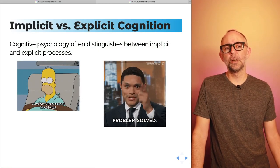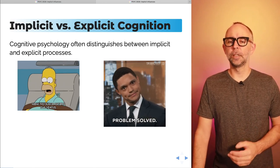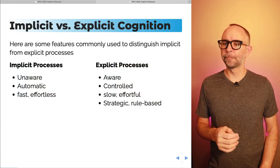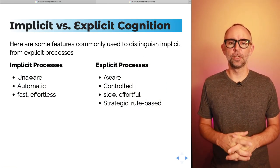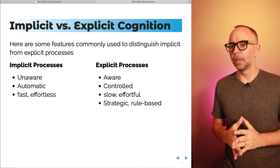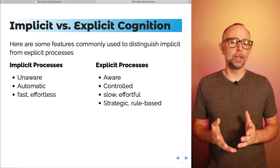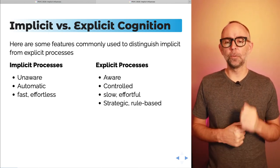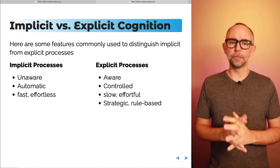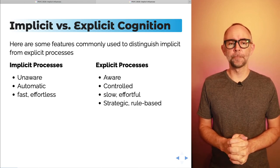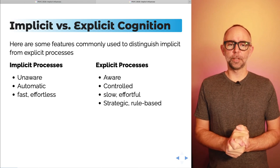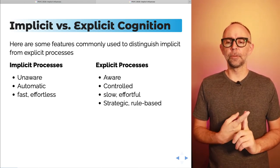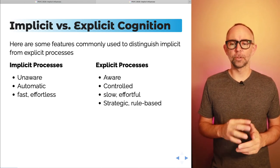Cognitive psychology as a discipline often distinguishes between implicit and explicit processes. For implicit processes, these are usually thought of as unaware — they might be automatic, happening without you thinking about them, quickly and without a lot of effort. By contrast, explicit processes are typically thought of as requiring awareness; they're things you know about, controlled, and could be slow and effortful, or strategic and rule-based.